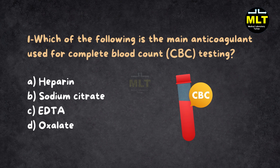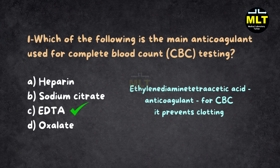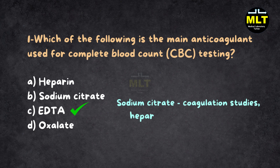Correct answer: C. EDTA. Explanation: EDTA, ethylenediaminetetraacetic acid, is the anticoagulant of choice for CBC because it prevents clotting by binding calcium ions without altering the morphology of blood cells. Sodium citrate is used in coagulation studies and heparin is preferred for plasma chemistry.